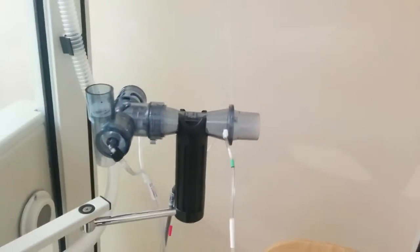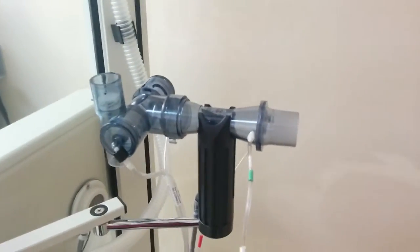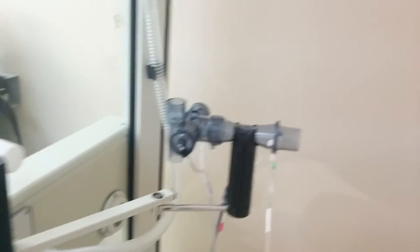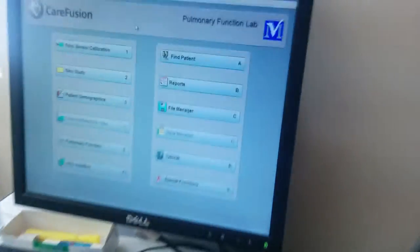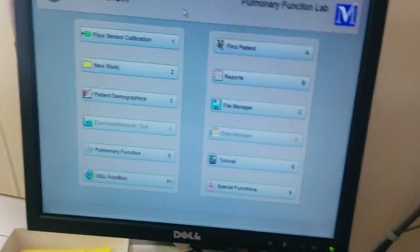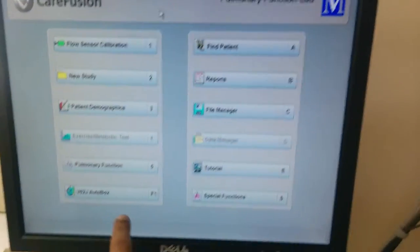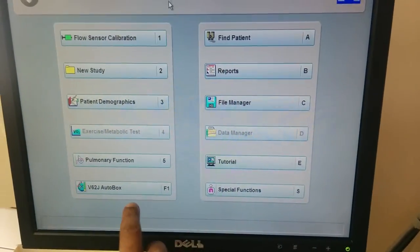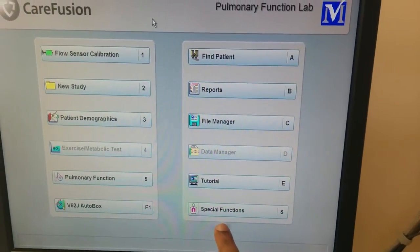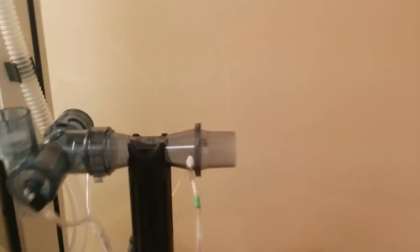When something goes wrong with the flow sensor, first of all, there will be an indication or a message at the bottom saying that the flow sensor is not working. You need to either recalibrate the flow sensor or change the flow sensor. Once you see that, you have to come.